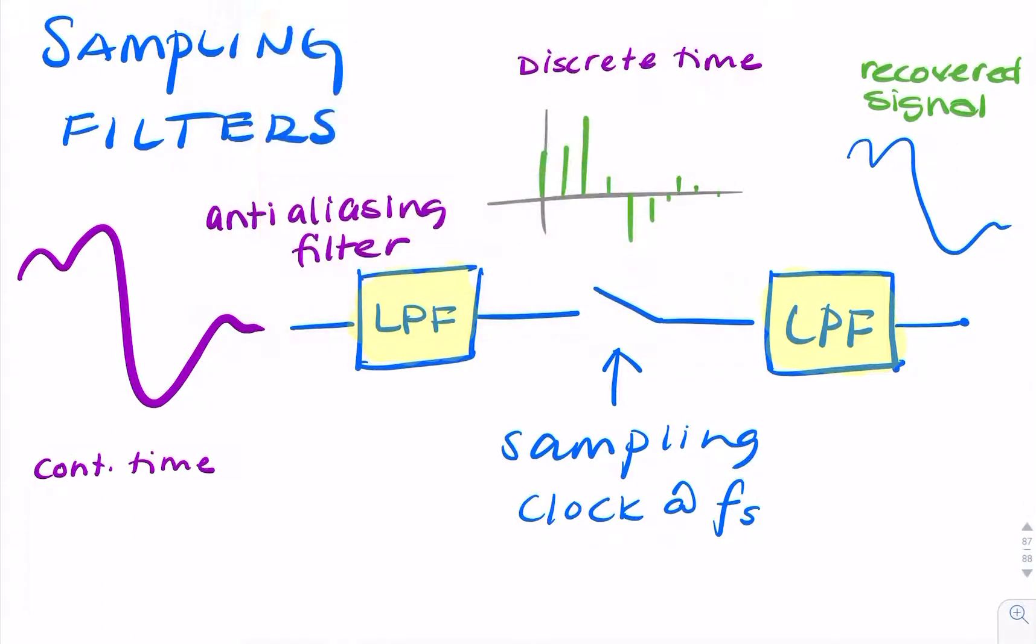And just to set it apart from this filter, we use the word 'pre'—so it's a pre-filter. It's a filter that comes before sampling, whereas this comes after sampling, so we call this a post-filter.